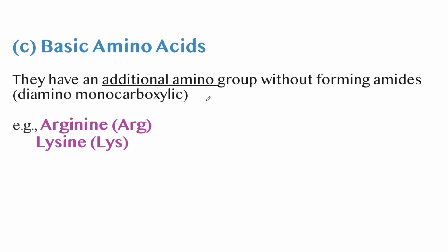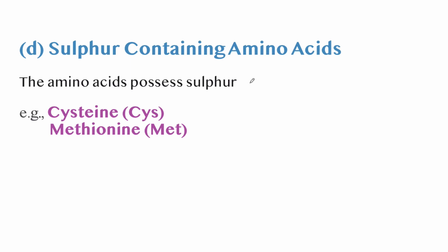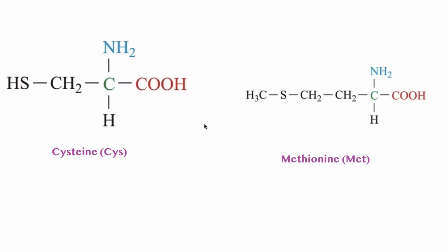Basic amino acids have an additional amino group without forming amides; they are known as diamino monocarboxylic amino acids. Examples are arginine and lysine, and their structures show an additional NH2 group. Sulfur-containing amino acids possess sulfur; examples are cysteine and methionine, and their structures contain sulfur.